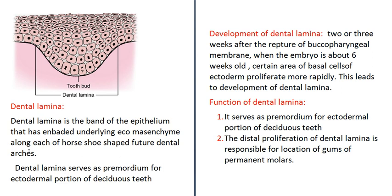The development of dental lamina begins two to three weeks after the aperture of the buccopharyngeal membrane, when the embryo is about six weeks old. At this point, certain areas of basal cells of the ectoderm proliferate more rapidly, leading to the development of dental lamina.